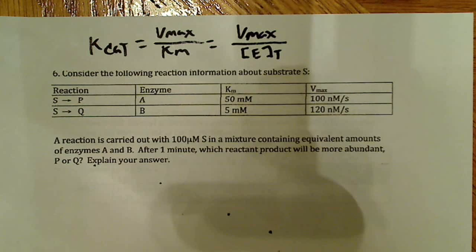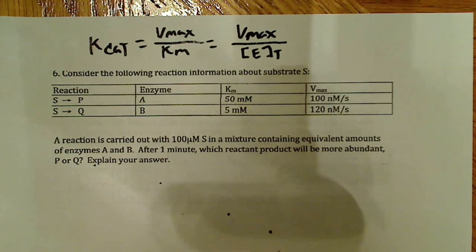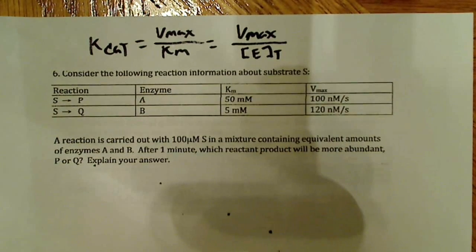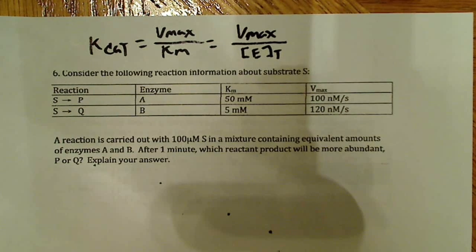Consider the following reaction information about substrate S. A reaction is carried out with 100 micromoles of S in a mixture containing equivalent amounts of enzyme A and B. After one minute, which product will be more abundant — P or Q? Explain your answer.